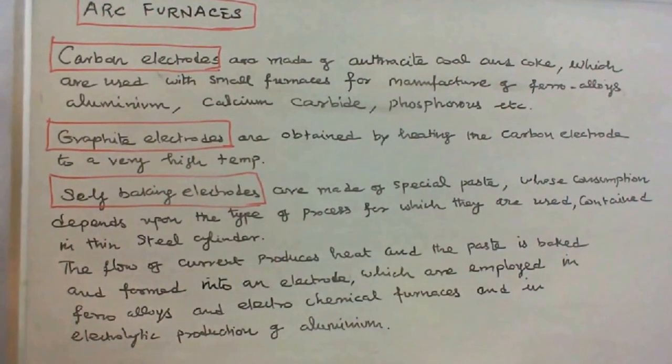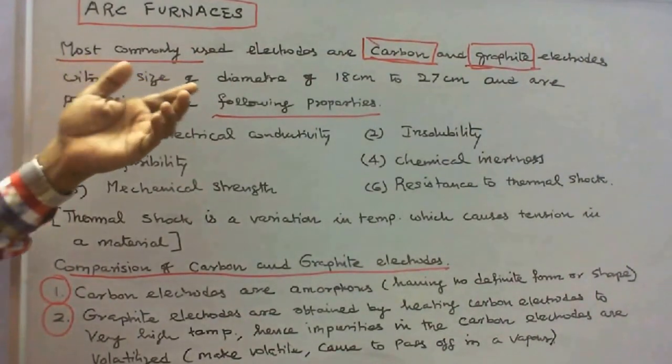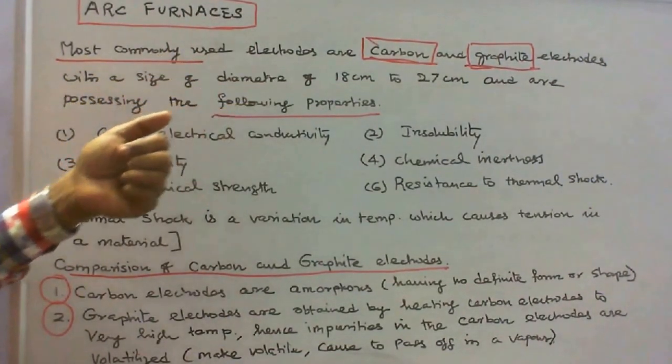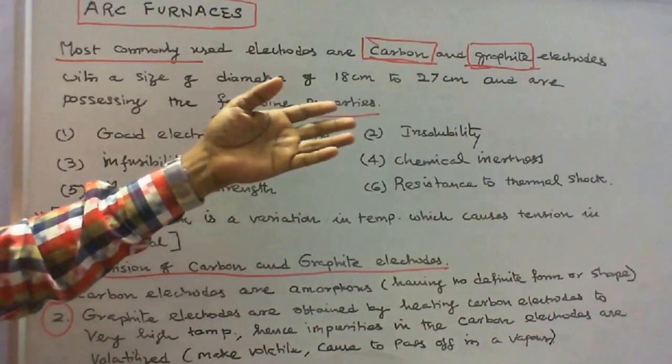Most commonly used electrodes are carbon and graphite electrodes with a size of diameter of 18 centimeter to 27 centimeter.